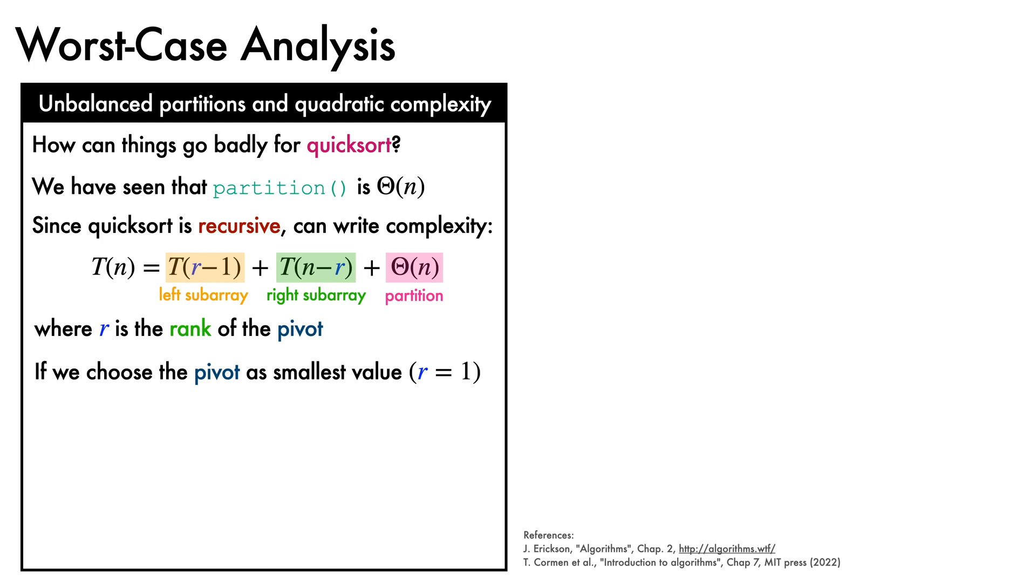Here, T(r-1) is the cost of calling quicksort on the left subarray, T(n-r) is the cost of calling quicksort on the right subarray, and big theta of n is the cost of running the partition function on the full current subarray under consideration. If we choose the pivot to be the smallest value, so that r equals 1, then our recurrence becomes T(n) equals T(0) plus T(n-1) plus big theta of n. Since T(0) is big O of 1, because no array comparisons are performed, we get that T(n) equals T(n-1) plus big theta of n.